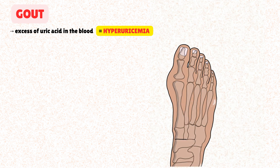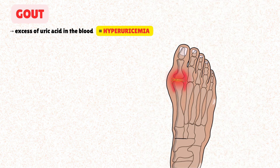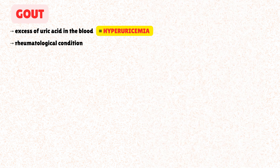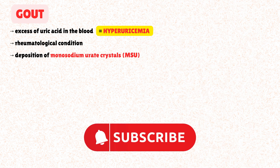Gout is caused by an excess of uric acid in the blood, a condition called hyperuricemia, which leads to the formation of sharp, painful crystals in the joints. In other words, gout is a classic rheumatological condition characterized by the deposition of monosodium urate crystals in joints and soft tissues.